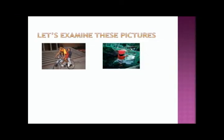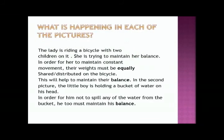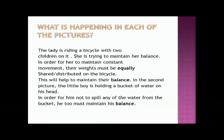Now, let's examine these pictures. Look closely at them. What is happening in the first picture? What is happening in the second picture? The lady is riding a bicycle with two children on it. She is trying to maintain her balance. In order for her to maintain constant movement, their weights must be equally shared or distributed on the bicycle. This will help to maintain their balance.